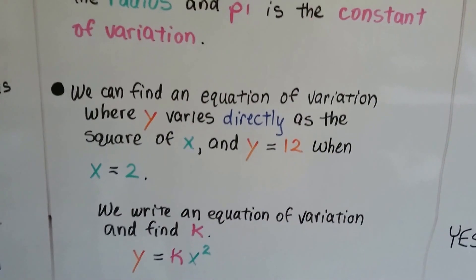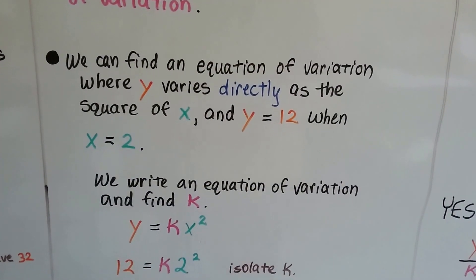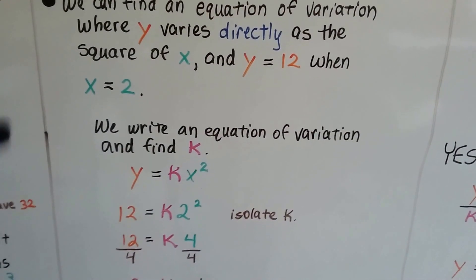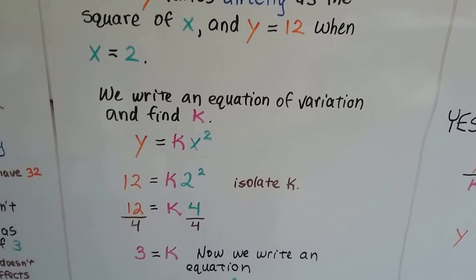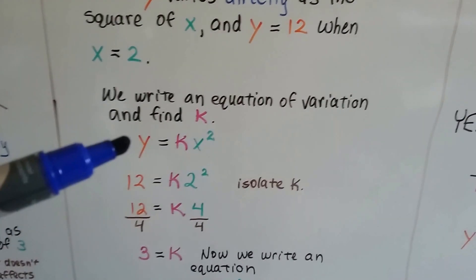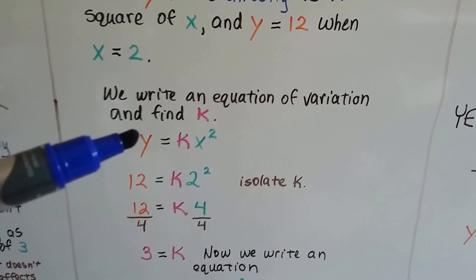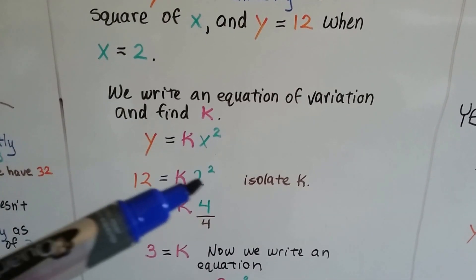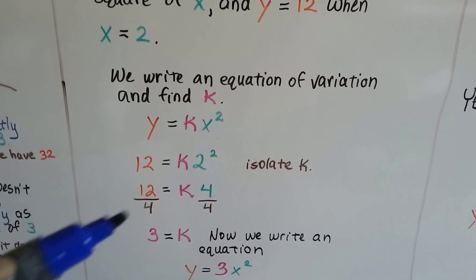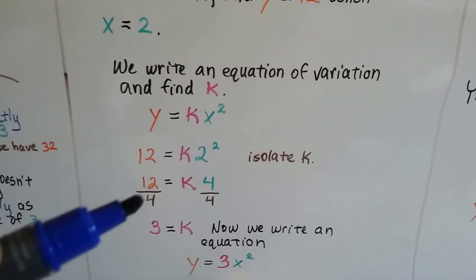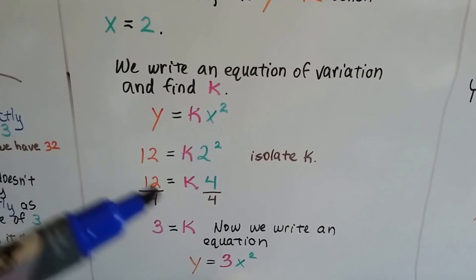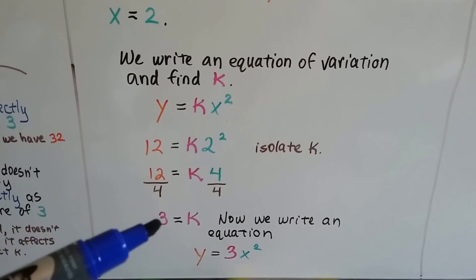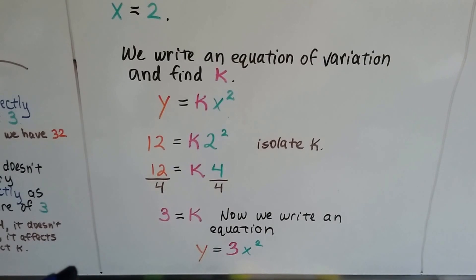So we can find an equation of variation where y varies directly as the square of x and y equals 12 when x equals 2. We write an equation of variation and find k. So we're going to solve for k. So here's our equation, y equals kx squared. We're going to use 12 for y and 2 for x. So we have 2 squared. We do our 2 squared and get a 4. Now, all we have to do is divide both sides of the equation by this 4, and it simplifies to 3 equals k.